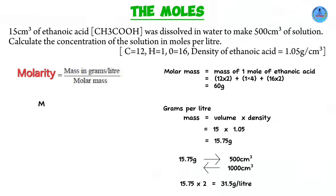We are now ready. Molarity equals 31.5 over the molar mass 60. The molarity for the ethanoic acid is 0.525 M.